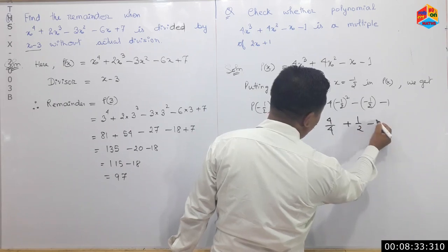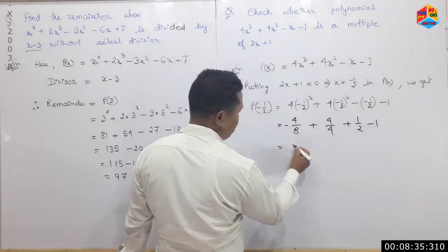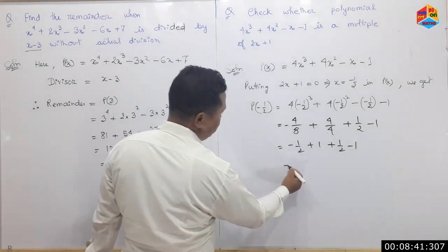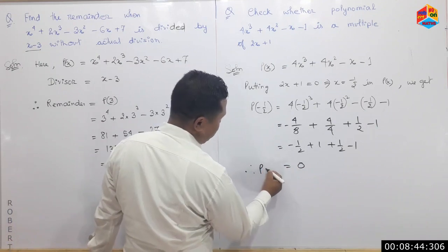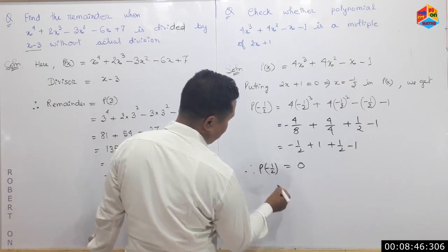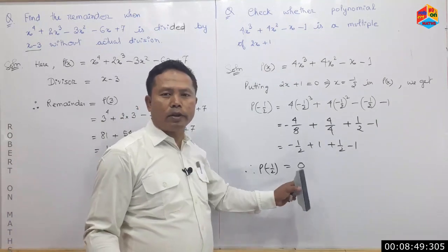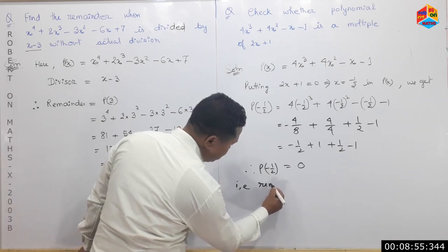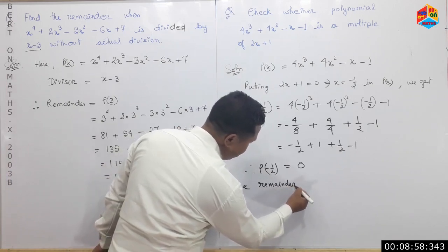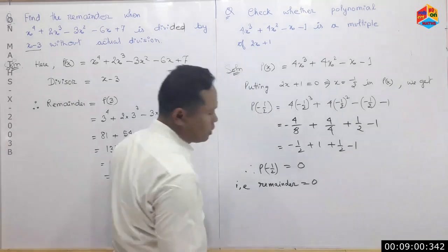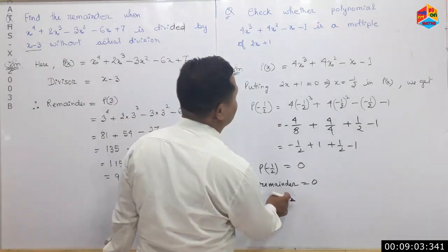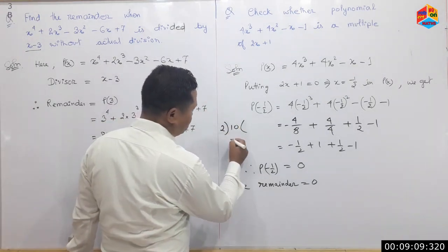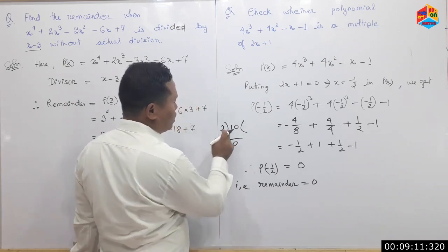Substituting: plus 1 by 2 and minus 1, minus 1 by 2 plus 1, plus 1 by 2 minus 1. Therefore P of minus 1 by 2 is 0. Therefore that is how the remainder is equal to 0.